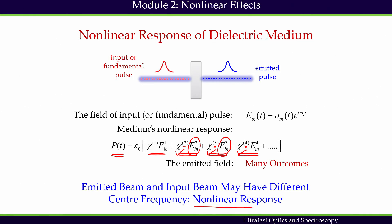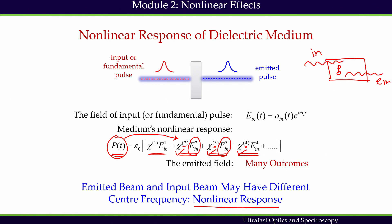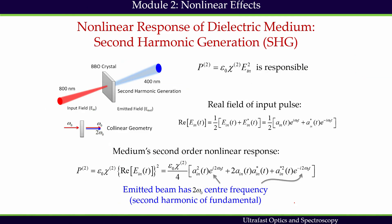This is called the non-linear response — the induced polarization is non-linear with respect to the input electric field. Recalling the two-step model: the input beam creates a polarization in the medium, and this polarization creates an emitted beam. What kind of emission occurs under non-linear response will be the topic of the next section.